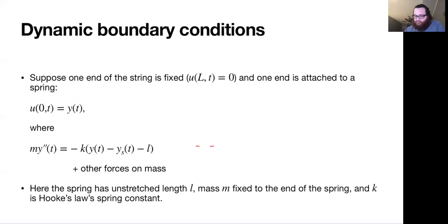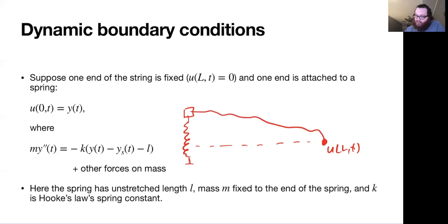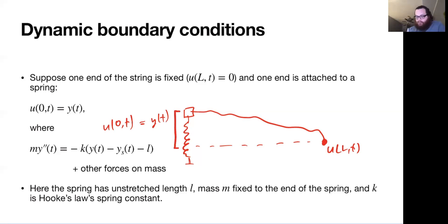What is the picture for this? Say this is height zero — this is the value for u of l comma t. On the other side we have a string or a spring, and that's our string. Over on this side, this height is the value that we're going to call y of t, which is exactly the value of the function u of zero comma t — the height of the end of the spring above height zero. We also have the height of the base of the spring, which is going to be y sub s of t.